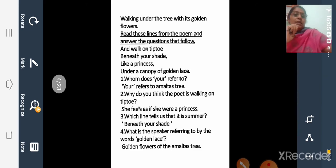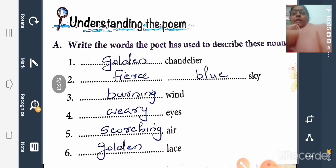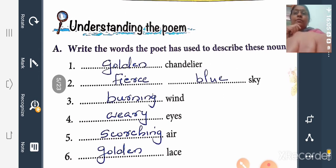So study these question answers from this poem. Then write the words the poet has used to describe these nouns. Golden chandelier, fierce blue sky, burning wind, berry ice, scorching air, golden lace. So he used all these words to describe these nouns. So study this also.